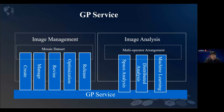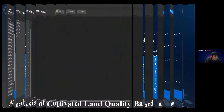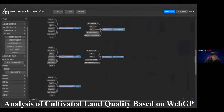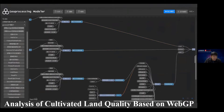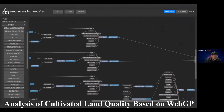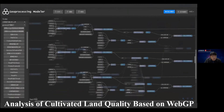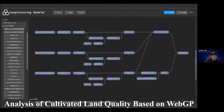The GP service is also provided. Based on image data, it supports creation, management, processing, optimization, and release, as well as image analysis including machine learning, distributed analysis, and spatial analysis. One case of GP service is the analysis of cultivated land quality based on Web GP — we can combine complex different types of processing tasks into one model and run all of them with just one click.